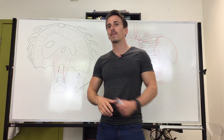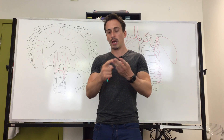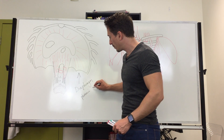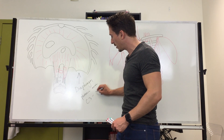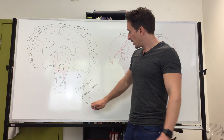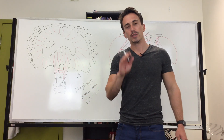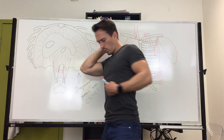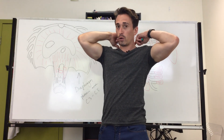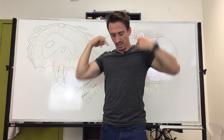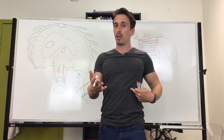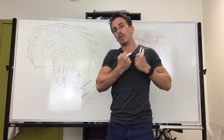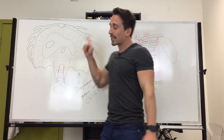The diaphragm is innervated by the phrenic nerve, which comes from cervical levels C3, C4, and C5. You can remember this as 'C3, 4, 5 keeps you alive.' Although the diaphragm is located inferiorly, the phrenic nerve originates in the neck because embryologically the diaphragm originated in the neck and pulled those nerves down with it as it descended.